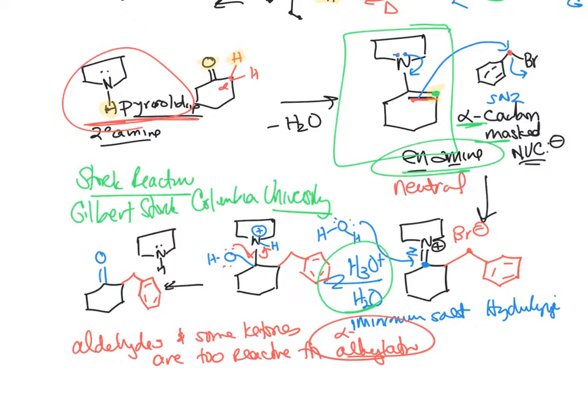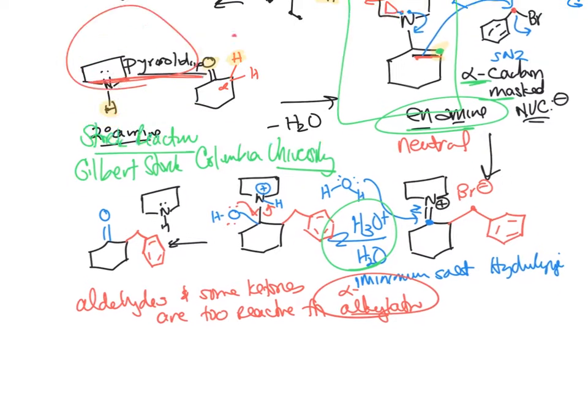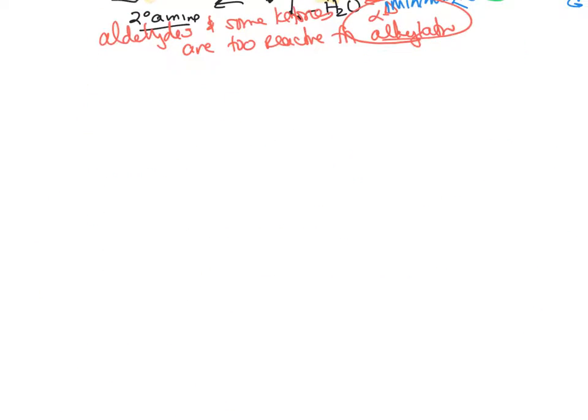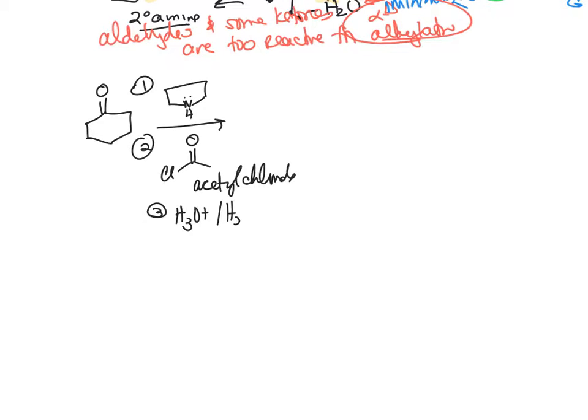Now notice you can also do acylations, so let's do that real quick. So if you take this ketone and you react it with pyrrolidine, and then you react it with acetyl chloride, and then the third thing you treat it with acid - all right, so what do you get? Well, step one.